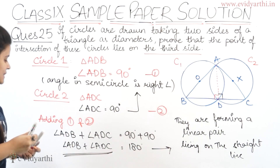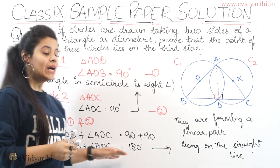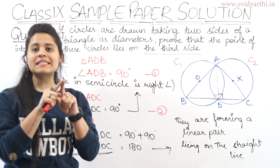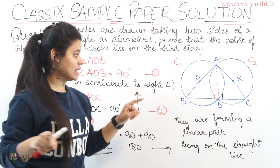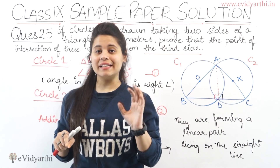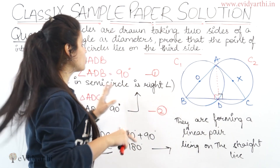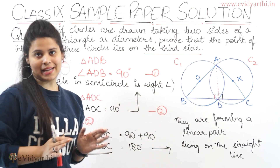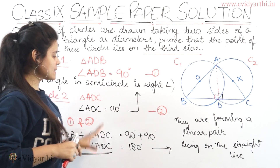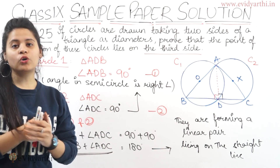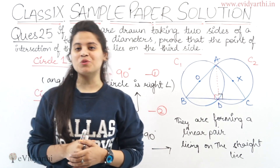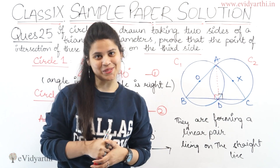We have proved that since both angles form a linear pair, they are lying on a straight line. And since they lie on a straight line, hence we can prove that the intersection point lies on the third side. This completes question number 25.